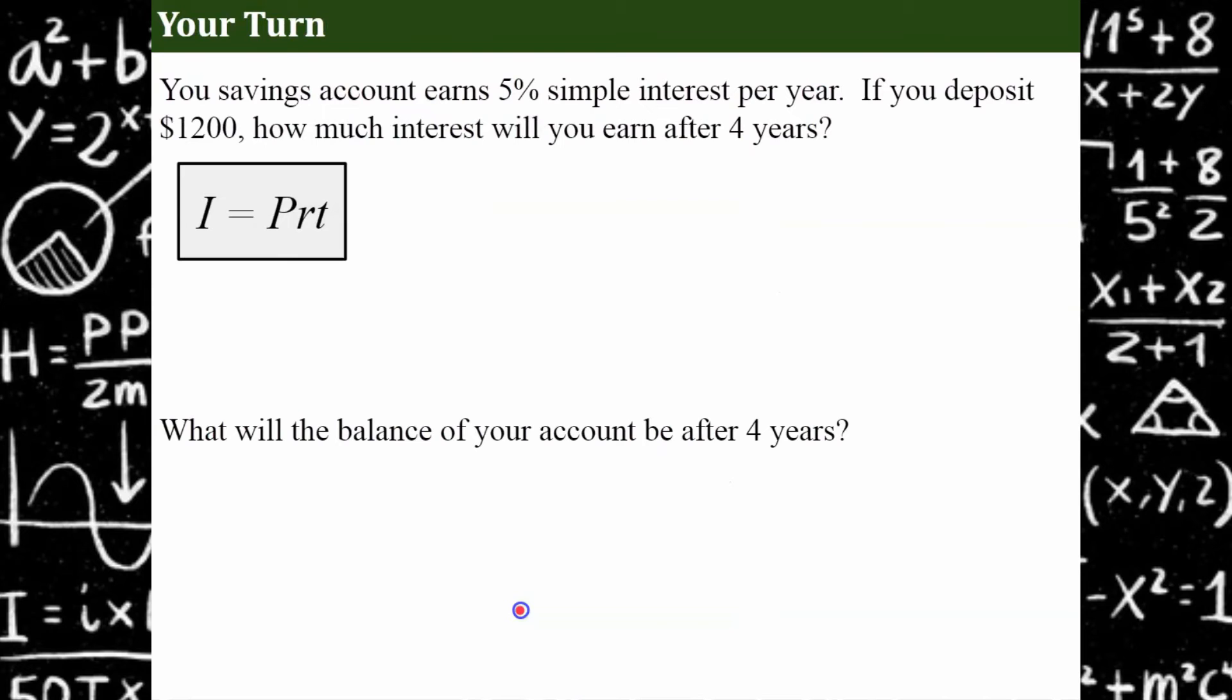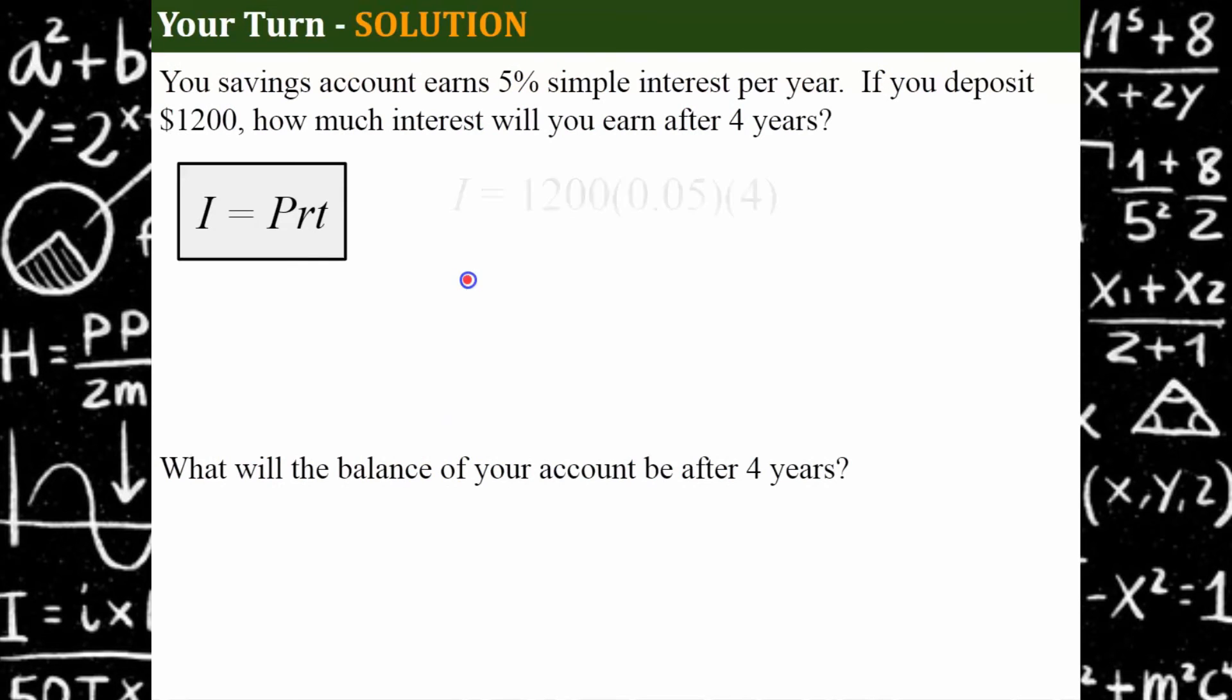Okay, it's your turn. I would like you to try this problem. Go ahead and hit pause and come back and hit play when you're ready to check your work. Welcome back. Let's see how you did. So we're going to identify our components. We want to know how much interest. So I is what we're looking for. Our principal is $1,200. That's what we deposited into our account. Our interest rate is 5% written as a decimal, 0.05. And our period of time is four years. $1,200 multiplied by 0.05 multiplied by four gives us $240. So we know that after four years, we're going to earn $240 of interest.